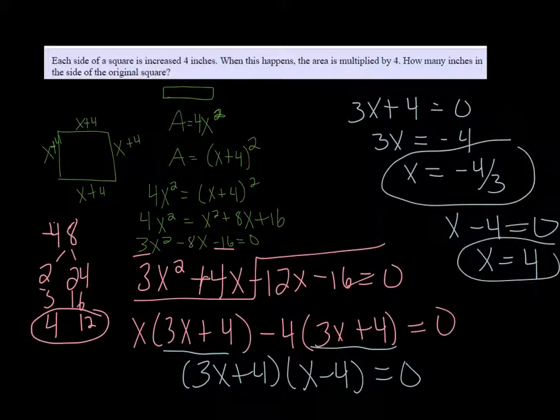Alright, so we get 2 answers here. But really, only 1 is going to make sense. We can't have a negative dimension, so we're going to cross out the negative 4 thirds.